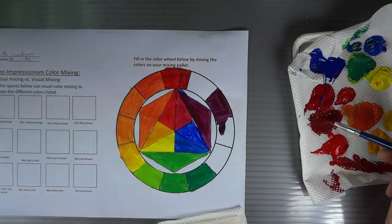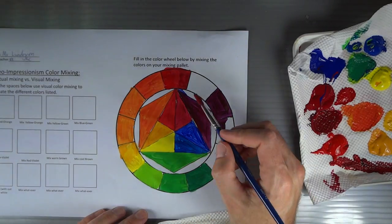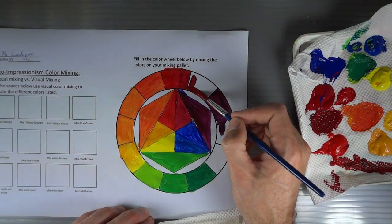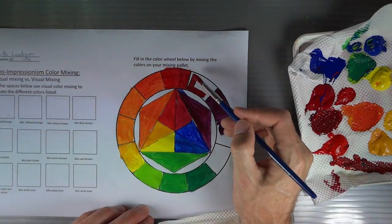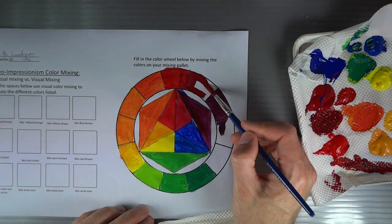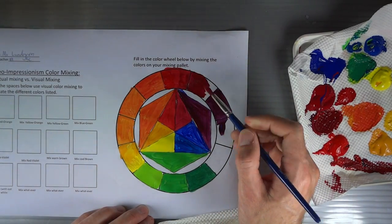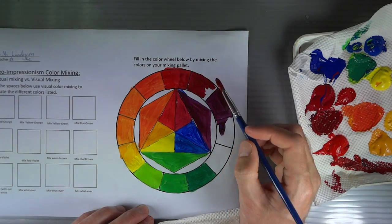All right, there we go. Now this is more to the red spectrum but it's still got some of that blue in, so it's like a red violet. Paint that in this spot.